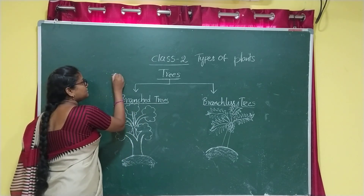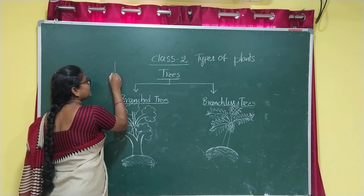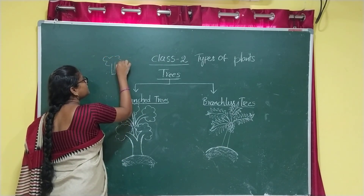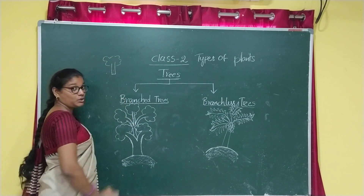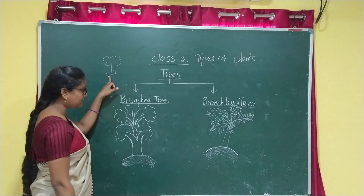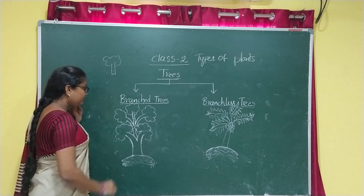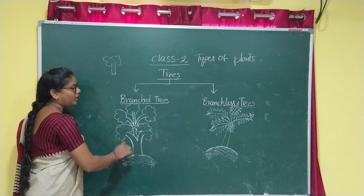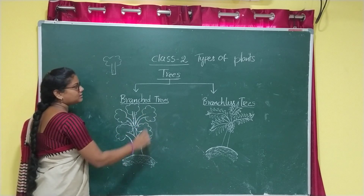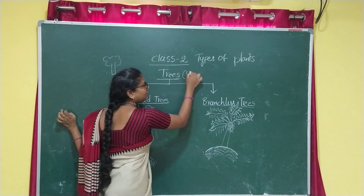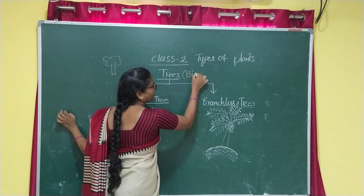Plants are small in size. Big plants are called trees.